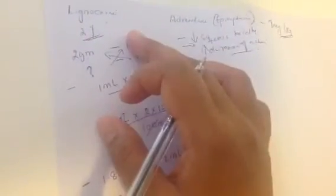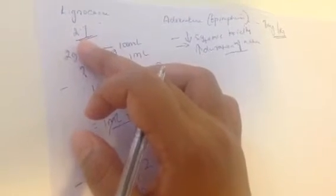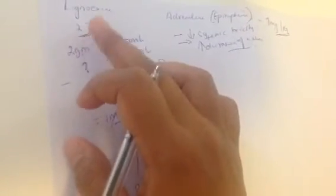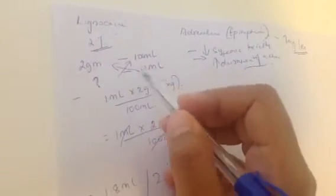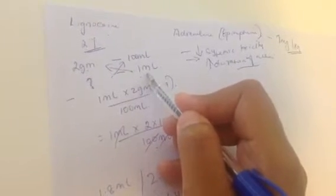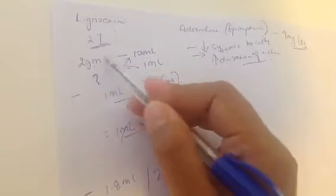The concentration of lignocaine is usually 2%. To decode what 2% means: keep the number 100 in mind — 2% means 2 grams in 100 ml. To find out how much is in 1 ml, you do cross multiplication, keeping ml on one side and grams or milligrams on the other.